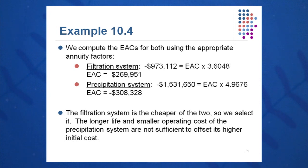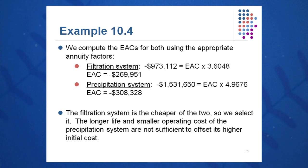For the precipitation system, taking its NPV divided by its annuity factor gives an EAC of negative $308,000 per year. Comparing on an equivalent annual basis — apples to apples — accounting for differing useful lives and maintenance costs, the filtration system is the cheaper option at approximately $270,000 per year versus $308,000 per year.